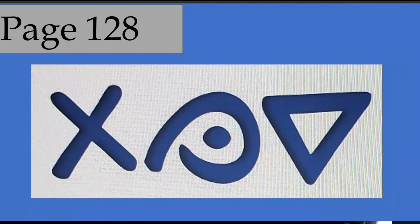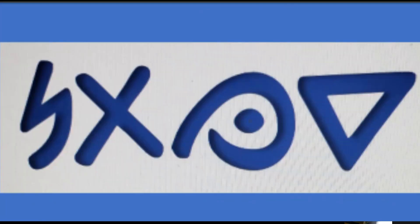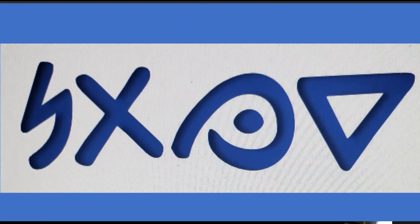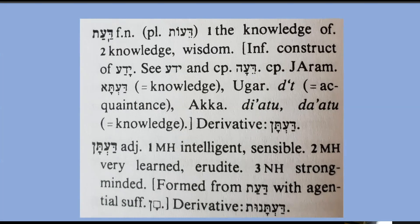On page 128, we'll look at Dalit-Ayin-Tav and also Dalit-Ayin-Tav-Nun. These are defined as the knowledge of, knowledge, wisdom — and then also intelligence, sensible, very learned, erudite, strong-minded. As you can see, just adding that Nun is that wisdom put into action.